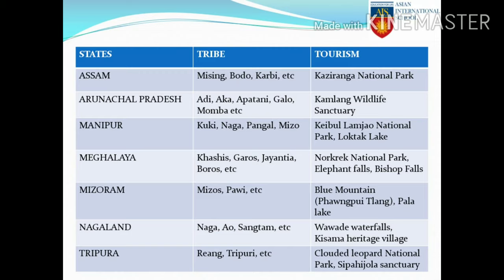Meghalaya, also known as the Land of Clouds, has tribes like Khasi, Garo, Jaintia and Boro; Nongkrem National Park, Elephant Falls and Bishop Falls are famous tourist spots. In Mizoram, Mizos and Pavi are the main tribes; the Blue Mountain, the highest point in the North East, and Pala Lake are the main tourist attractions. In Nagaland, Naga, Ao and Sanctam tribes are found; Vavade Waterfalls and Kisama Heritage Village are main tourist spots. In Tripura, Riyang and Tripuri are the famous tribes, and Clouded Leopard National Park and Sipahijola Sanctuary are the main tourist spots.